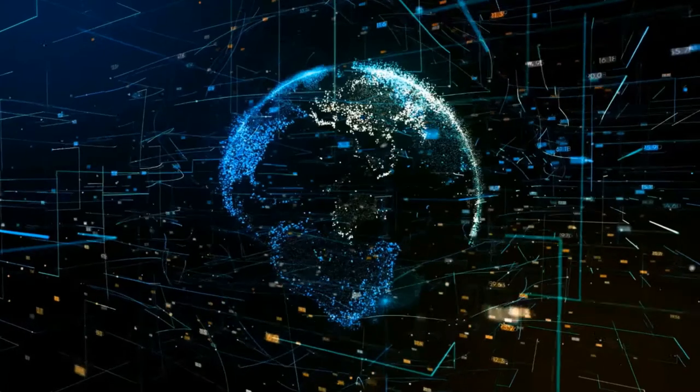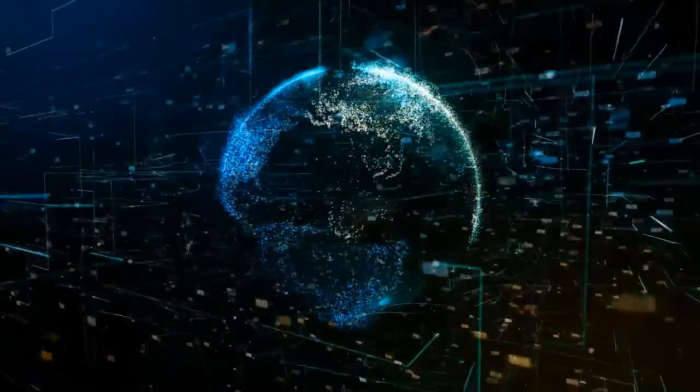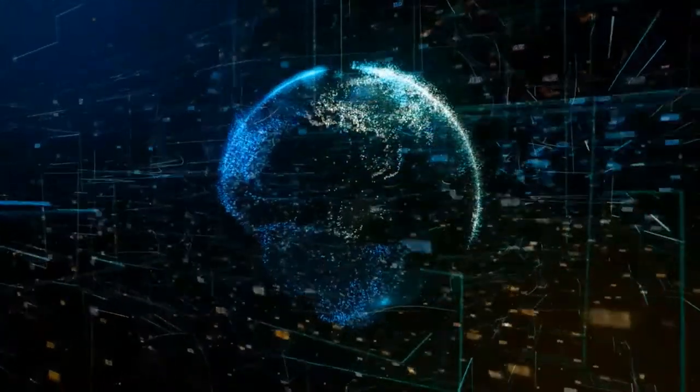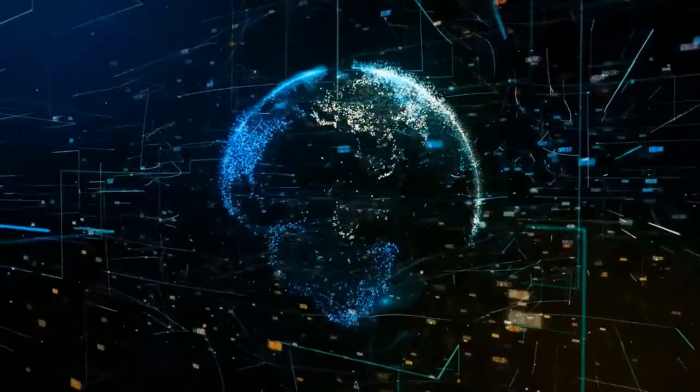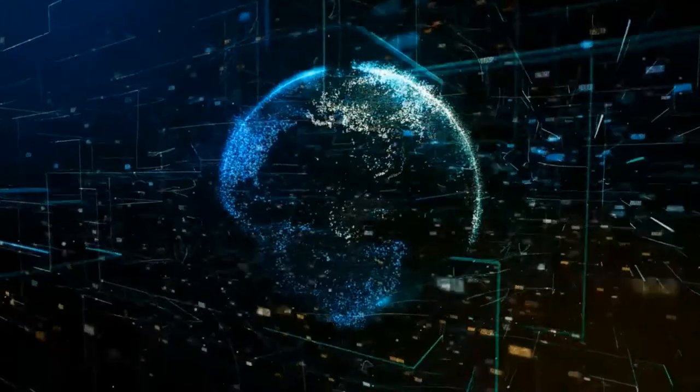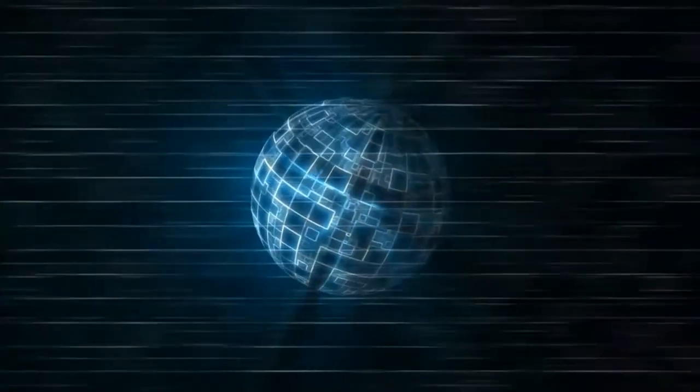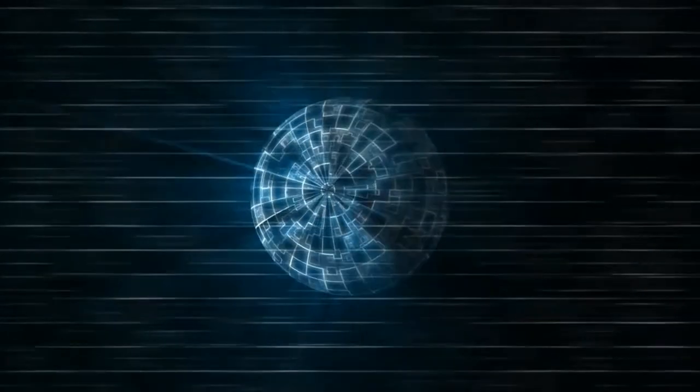Humans can't construct a Dyson sphere yet, but nanorobots could do it, Turchin says. The baby bots could start mining a small planet for iron and oxygen and use these resources to create a reflective hematite surface around the sun.